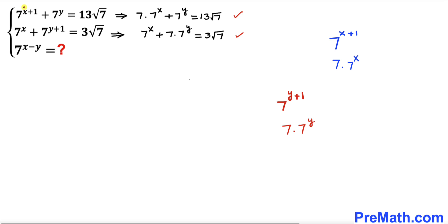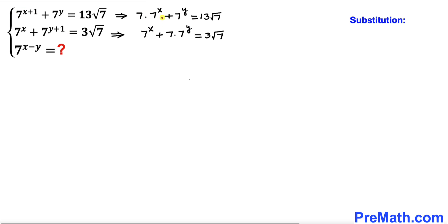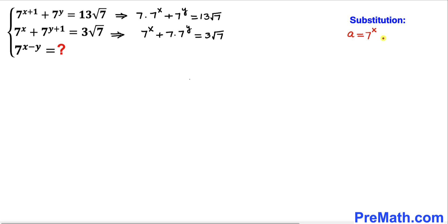So our two equations can be rewritten using these expansions. To make our job easier, let's make a substitution: let a = 7^x and b = 7^y.